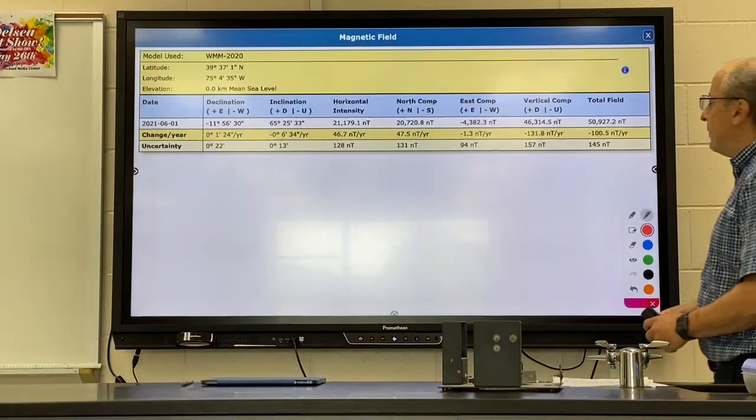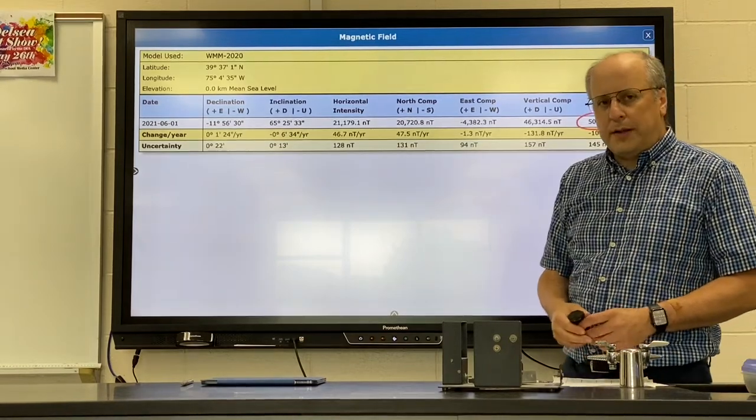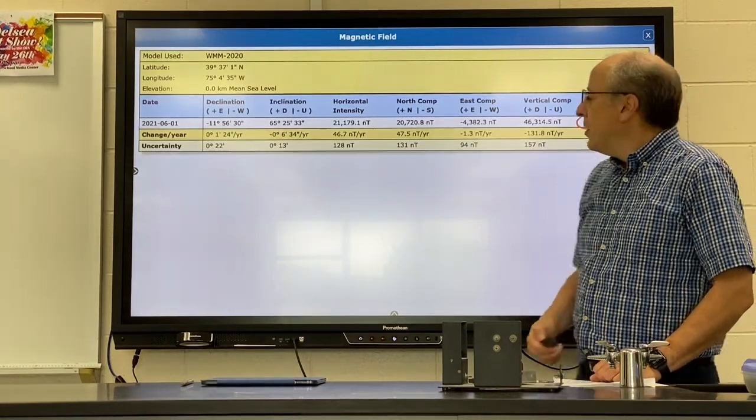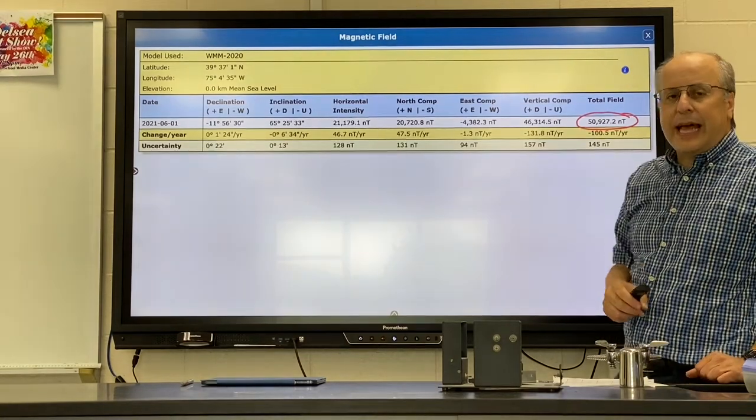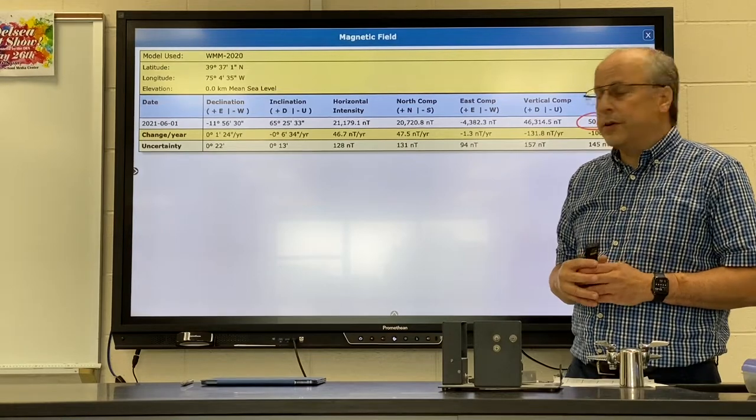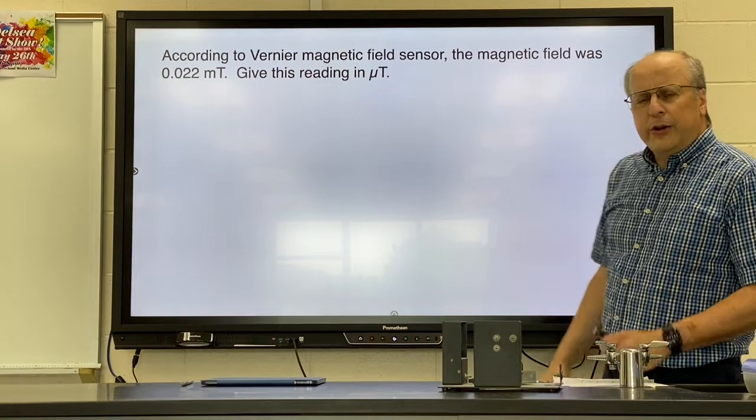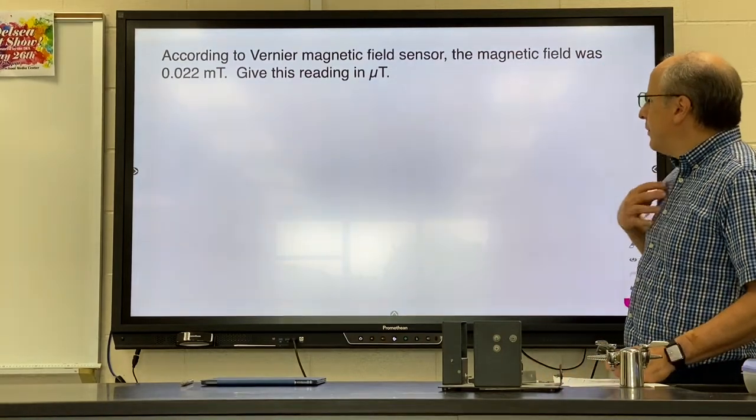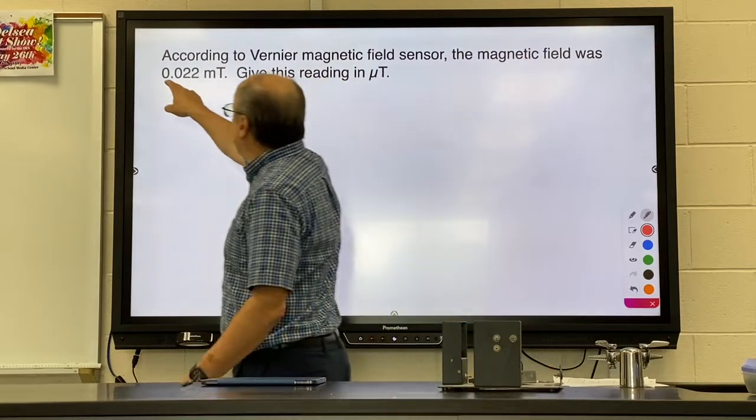Okay, for Franklinville, our magnetic field is about 51 microtesla. Notice that the U.S. Geologic Survey measures in nanotesla but you just move your decimal point to convert. So you'll see a lot of weird units for magnetic fields. Vernier, when they use their magnetic field sensor, do it in millitesla.